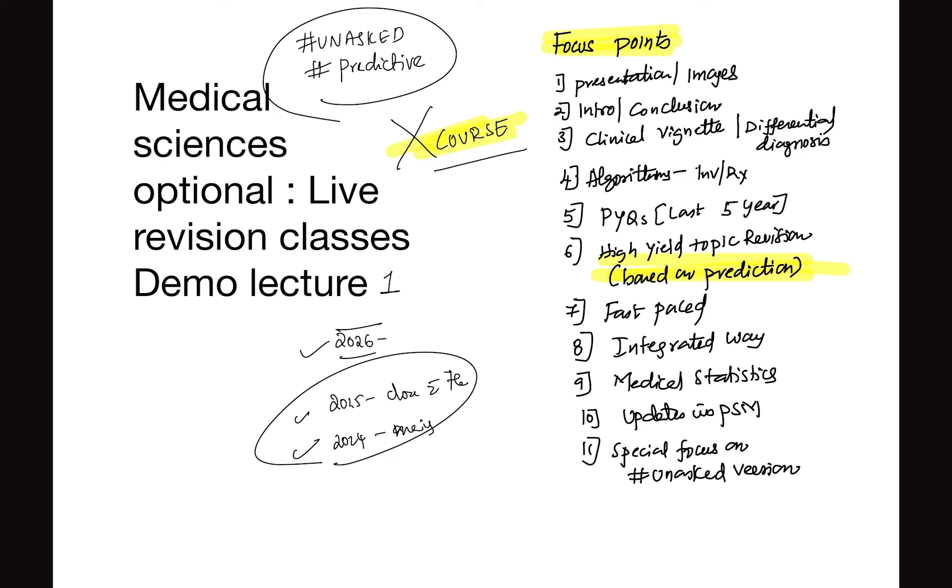The approach is most in an integrated way. We'll try to cover medical statistics like recent updates from ICMR and National Family Health Survey data and WHO data. Problem statements of most of the PSM and cancers we'll cover. I'll give you details about latest updates in PSM from national health programs. There will be special focus on unasked version from subjects, from each subject.